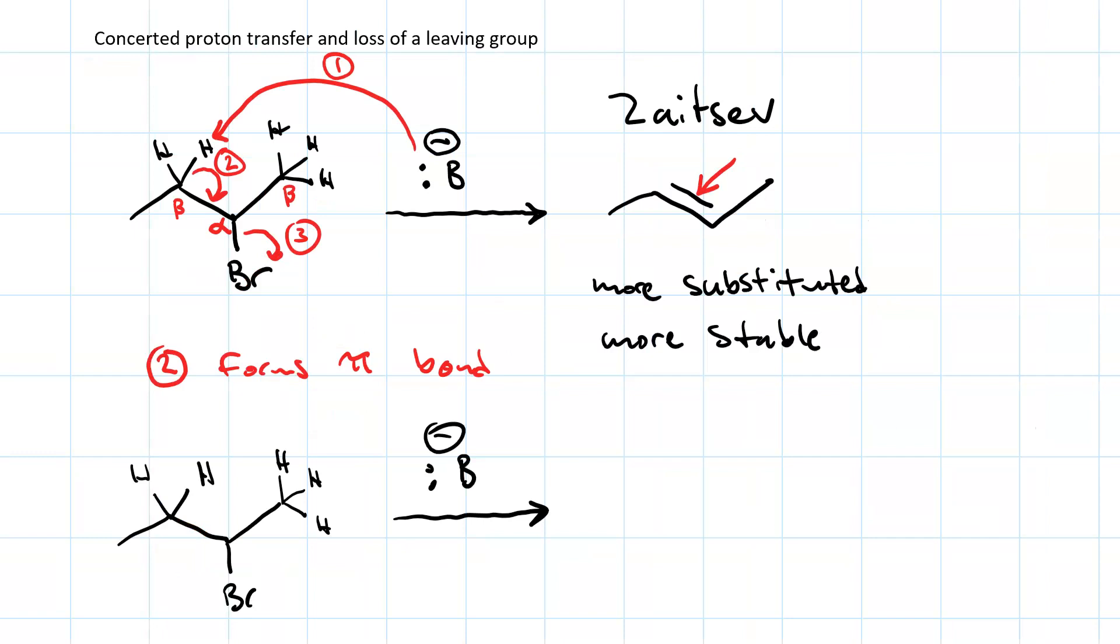On the other hand, if my base attacks a proton from the less substituted beta carbon, and we get loss of a leaving group, then we end up with the less substituted alkene.